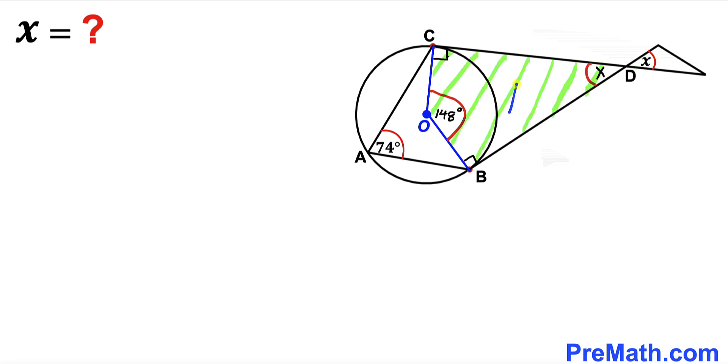Now let's focus on this quadrilateral BOCD and we know that the sum of the angles in any quadrilateral is 360 degrees. So therefore the sum of these angles must be equal to 360 degrees. Let's go ahead and add up all these four angles.